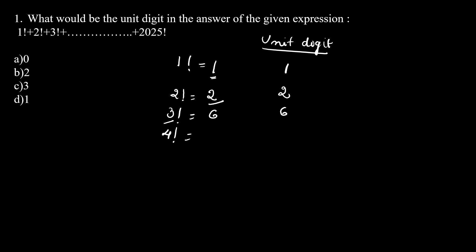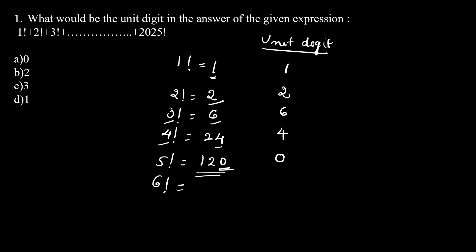Now, 4 factorial is 6 into 4, that is 24, and the unit digit is 4. Next is 5 factorial, that is 24 into 5, that is equal to 120, and the unit digit is 0. Next, 6 factorial is 120 into 6, that is equal to 720, and again the unit digit is 0.